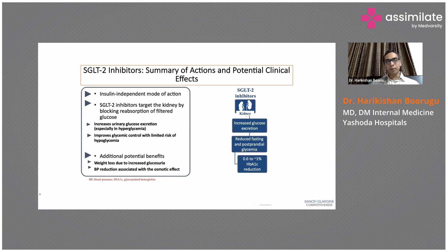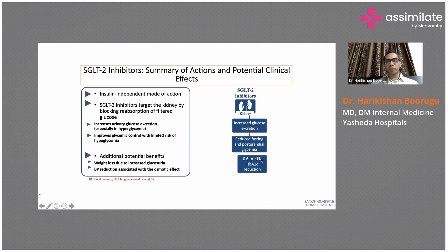When starting a patient on SGLT-2 inhibitors, caution them about symptoms suggestive of urinary or genital infection — like frequency of urination or burning while passing urine. If these occur, call them back, stop the drug, and switch to an alternate drug. SGLT-2 inhibitors can reduce HbA1c by 0.6 to about 1%.